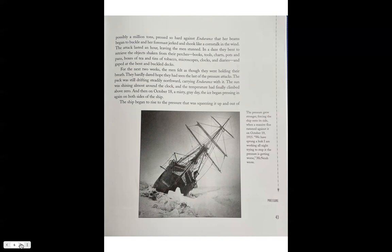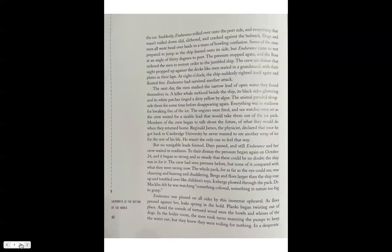Then on October 18th, a misty gray day, the ice began pressuring in again on both sides of the ship. The ship began to rise to the pressure, squeezing it up and out of the ice. Suddenly Endurance rolled over onto its port side, and everything that wasn't nailed down slithered and crashed against the bulkhead. The dogs and men all went head over heels in a mass of howling confusion. Some of the men prepared to jump, but Endurance came to rest at an angle of 30 degrees to port. The crew ate dinner that night propped up against the decks like men seated in a grandstand with their plates in their laps. At 8 o'clock, the ship suddenly righted itself again and floated free.